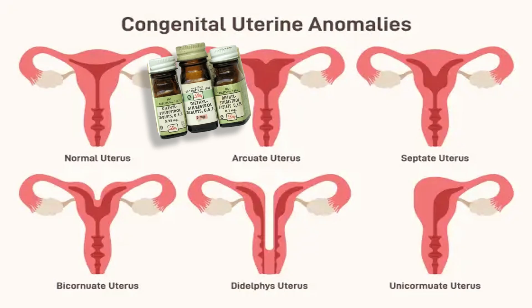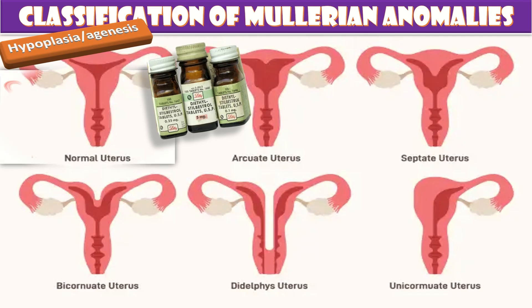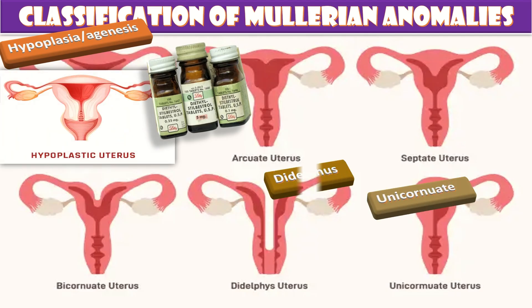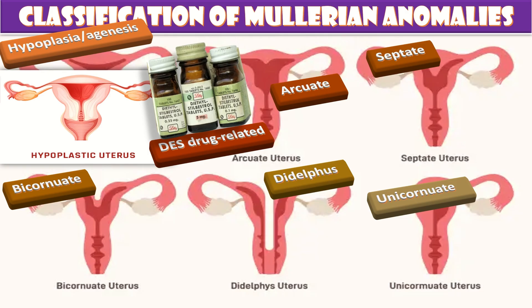The Mullerian anomalies are classified into hypoplasia or agenesis, unicornuate uterus, didelphic uterus, bicornuate uterus, septate uterus, arcuate uterus, and diethylstilbestrol drug-related abnormalities of the uterus.